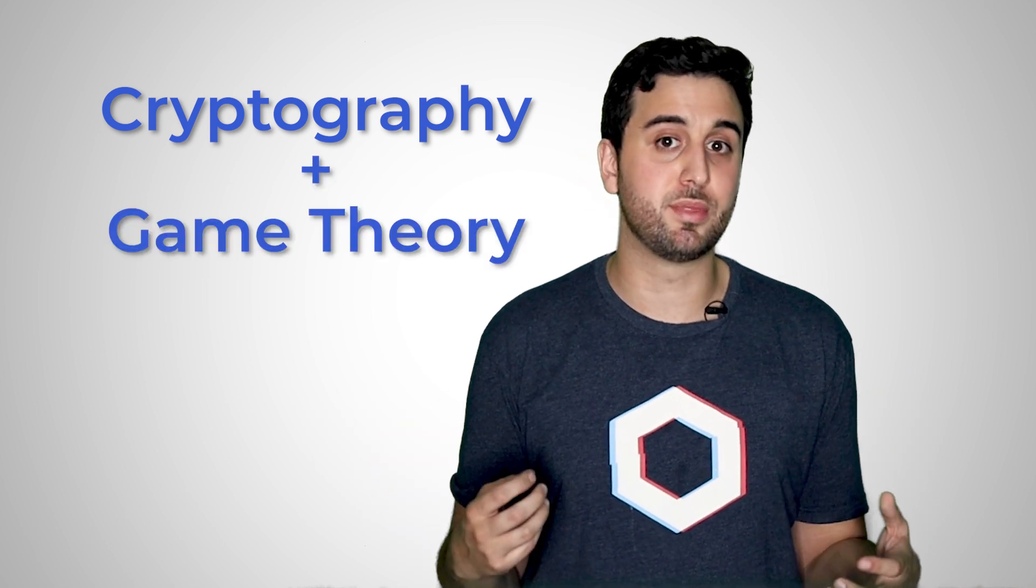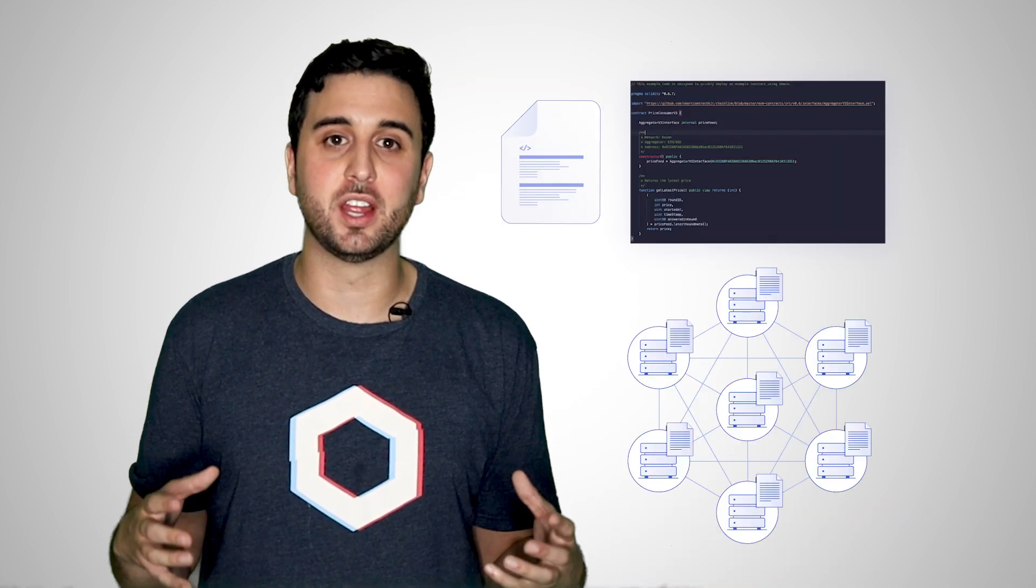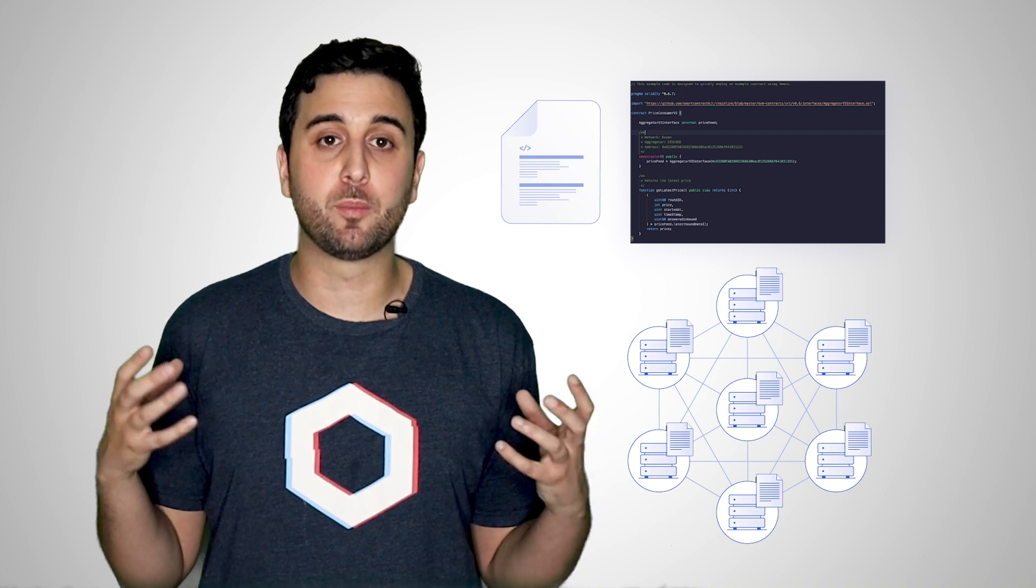Blockchains maintain this high degree of decentralization through a combination of cryptography and game theory. These traits impede centralizing forces and incentivize actors within the system. Because smart contracts are stored and run on blockchains, they inherit all of the powerful properties of them.